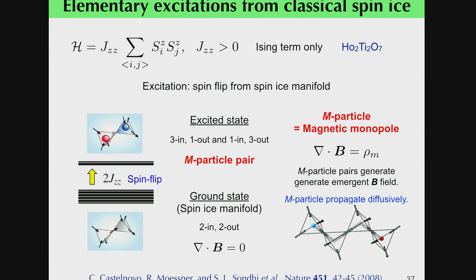This corresponds to the pair formation of magnetic monopoles. The spin gives rise to a B-field through this equation. I will call the magnetic monopole the M particle. The excitation energy of an M particle is 2J_zz. The classical M particle is dispersionless, as drawn in this figure.